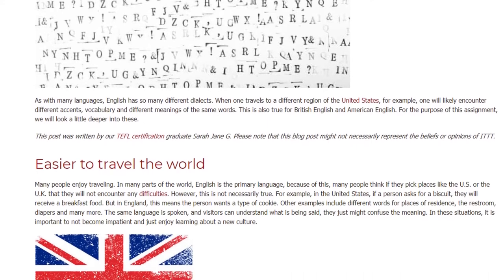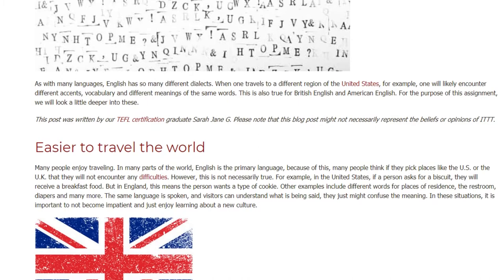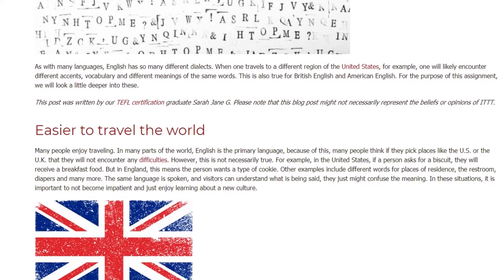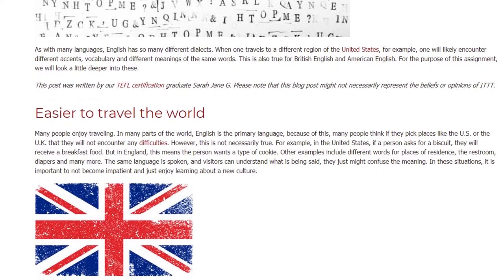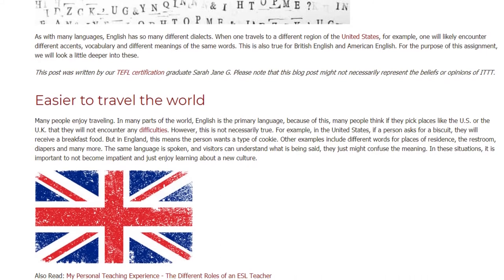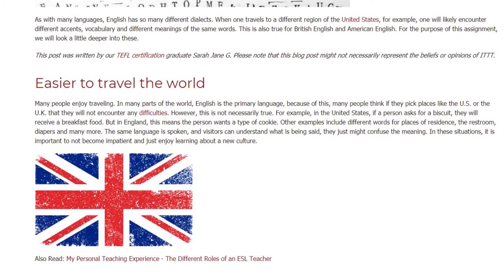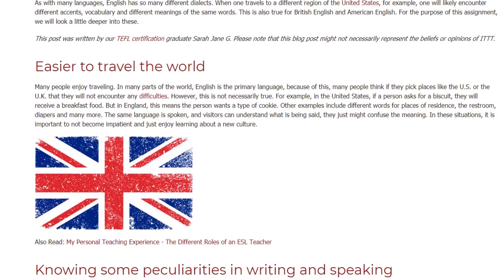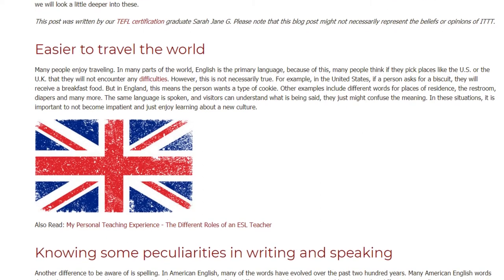For example, in the United States, if a person asks for a biscuit, they will receive a breakfast food, but in England this means the person wants a type of cookie. Other examples include different words for places of residence, the restroom, diapers, and many more. Visitors can understand what is being said but might confuse the meaning. In these situations, it is important to not become impatient and just enjoy learning about a new culture.